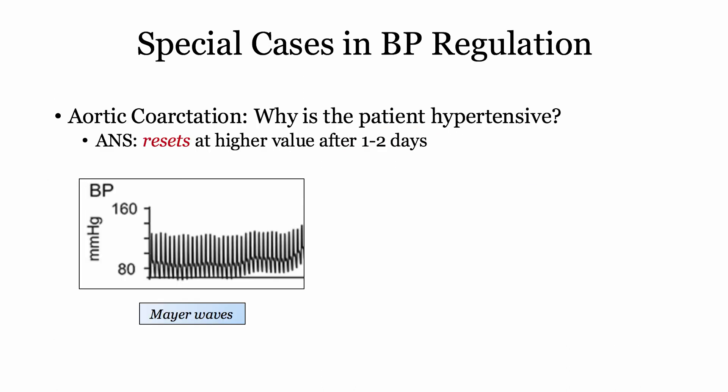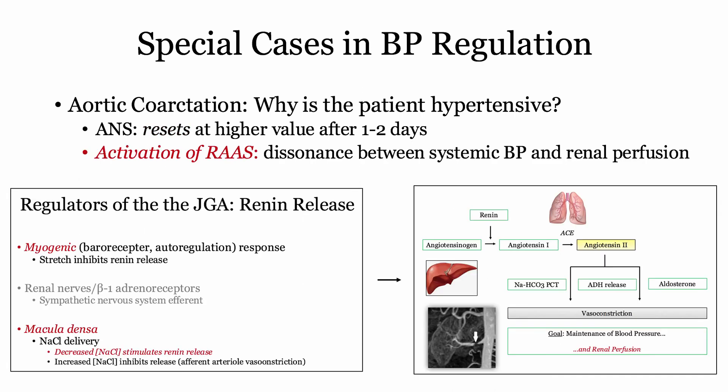Scenario number two: coarctation. Why does the patient with coarctation become hypertensive? It is not because of the stenotic segment. We know it isn't related to the autonomic nervous system, as the peripheral baroreceptors just turn a blind eye to elevated values after a day or two. The kidney is being hypoperfused — the coarctation decreases blood delivery to the kidney, and renin is released. This scenario highlights the dissonance between renal perfusion and systemic blood pressure.